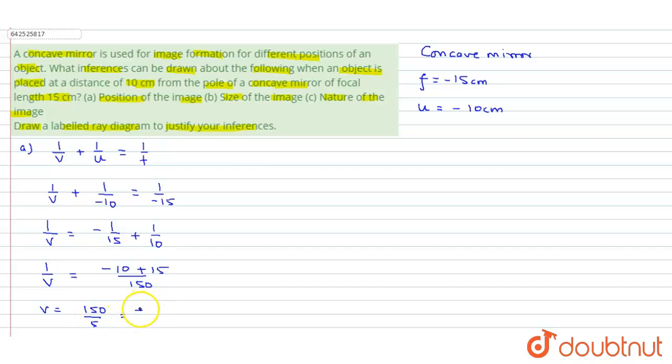So v becomes 150 upon 5, and on solving, it comes out to be plus 30 cm. This is the position of the image that is plus 30 cm.